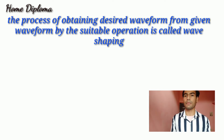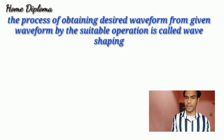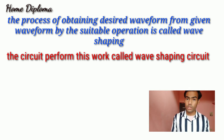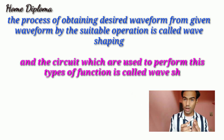The process of obtaining a desired waveform from a given waveform by the suitable operation is called wave shaping, and the circuit which is chosen to perform this function is called a wave shaping circuit.